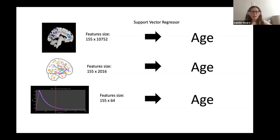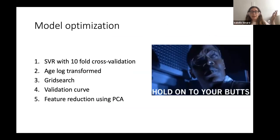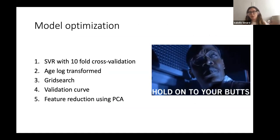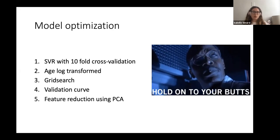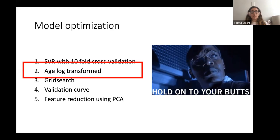I created all these scripts. The first step was to use the same algorithm in each model but change the features to compare different modalities of resting state activity. I decided to use the same algorithm for each script. First step was model optimization to find the best model on my training data to use on my test data. I tried different types of model optimization: started with 10-fold cross-validation, then log-transforming age, then grid search, then validation curve, and the last step — which I probably should have kept — was PCA feature reduction. The one most predictive on training data was SVR with 10-fold cross-validation and log-transforming age.